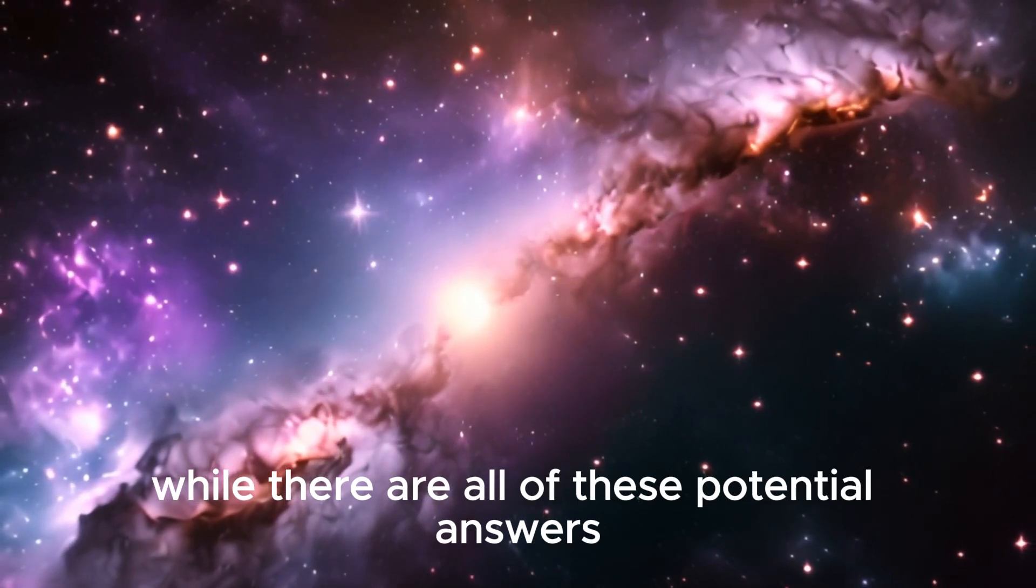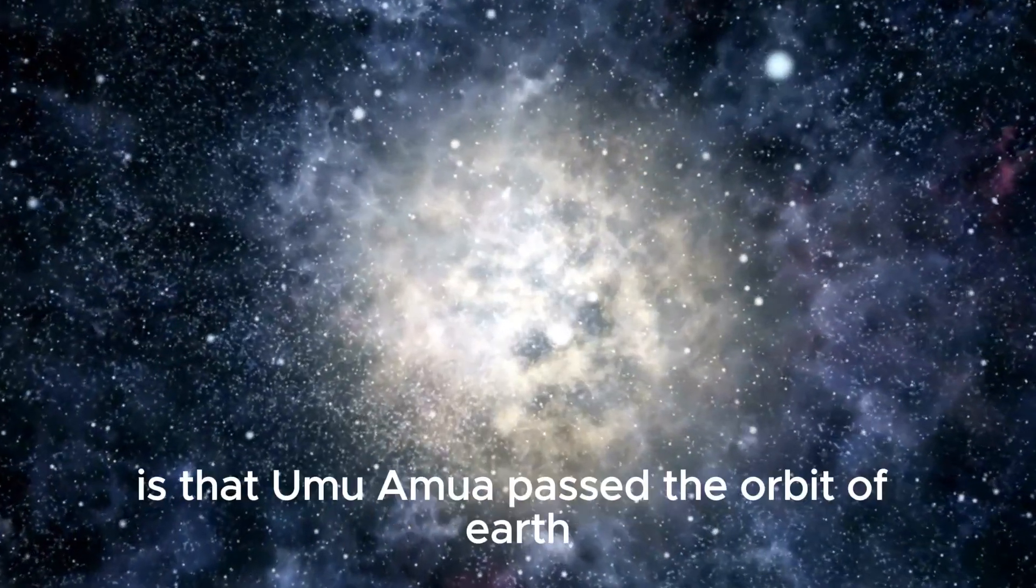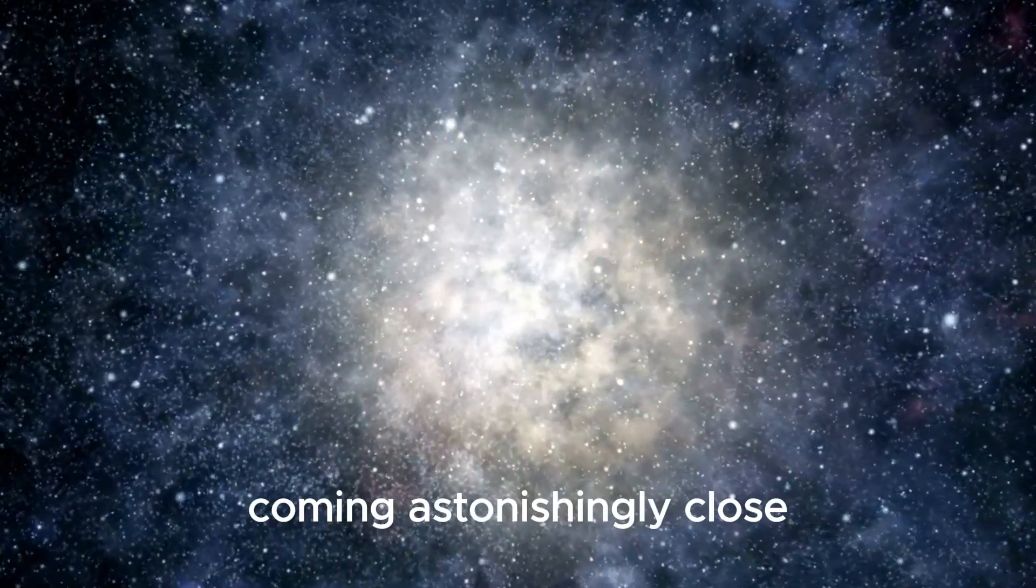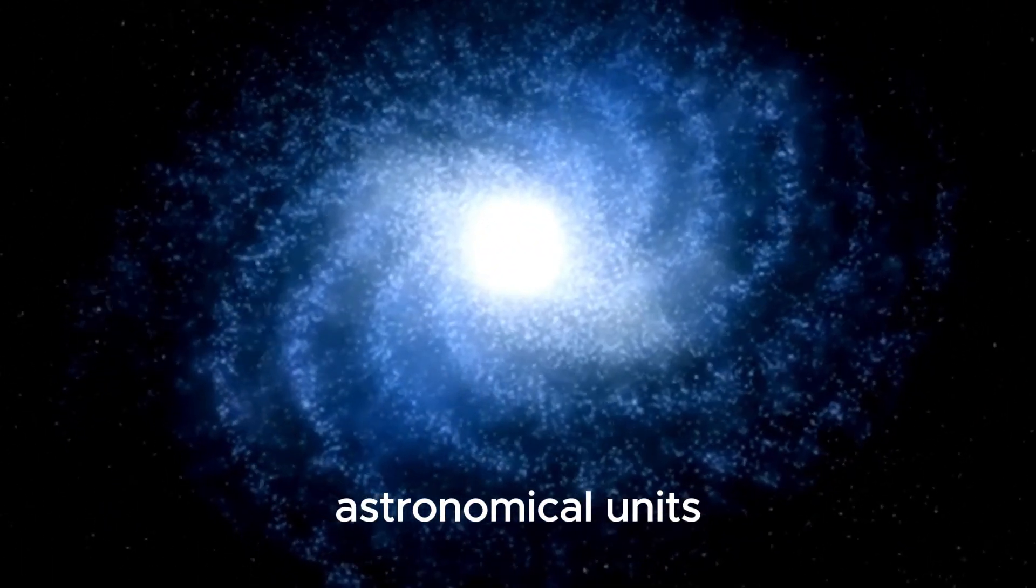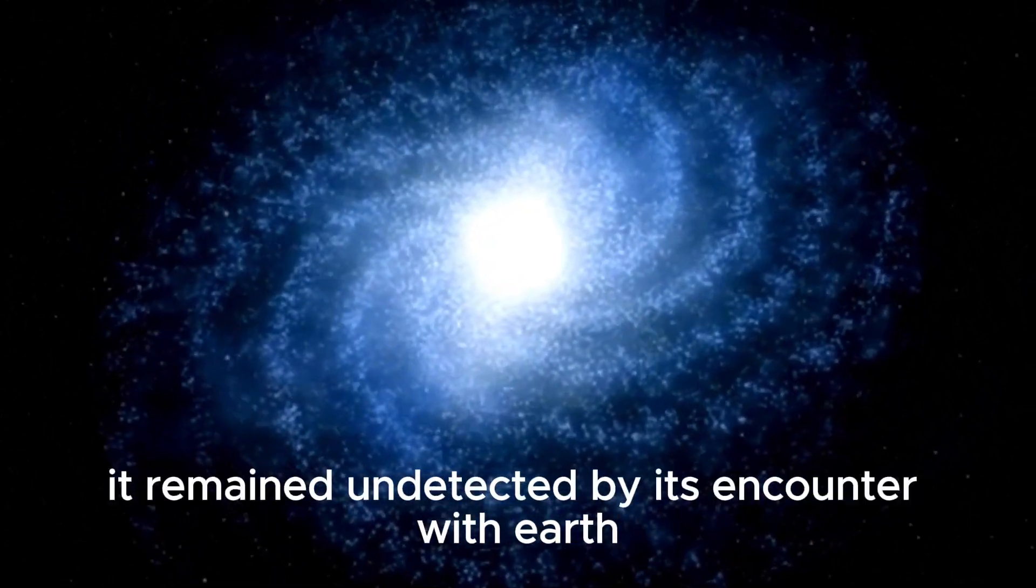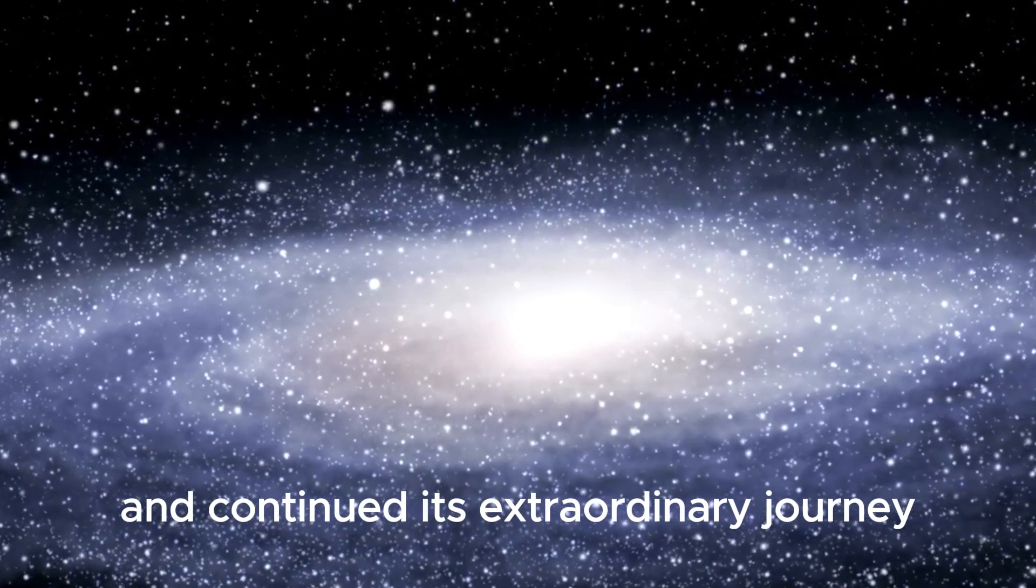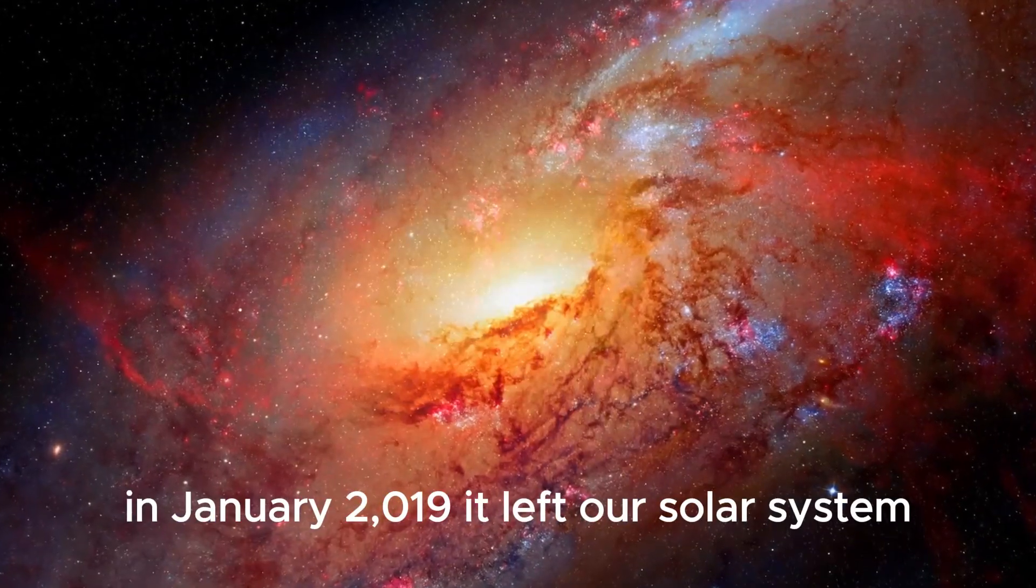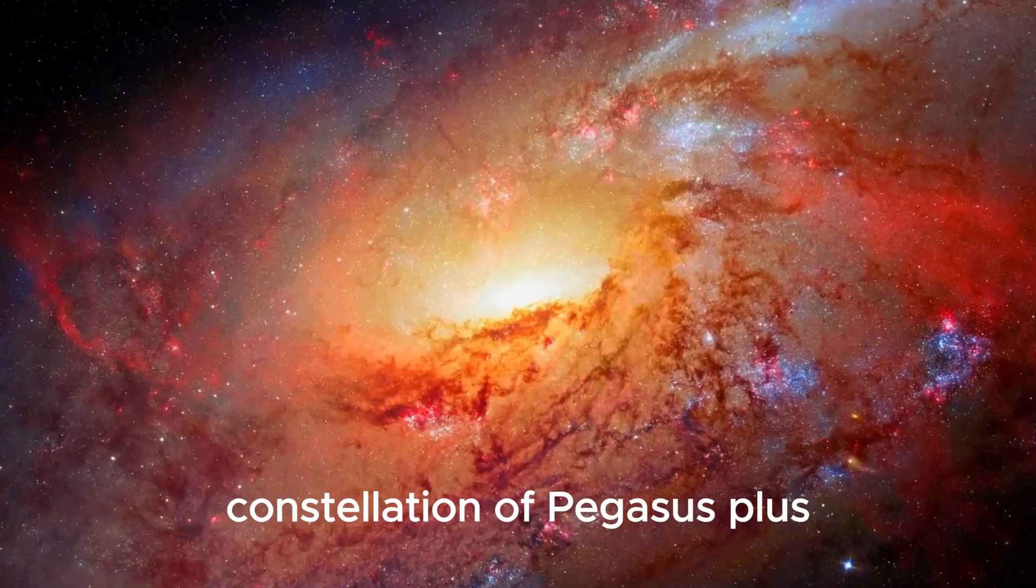While there are all of these potential answers, there aren't really any confirmations on them. What's worse is that Oumuamua passed the orbit of Earth on October 14, 2017, coming astonishingly close at a distance of approximately 0.1618 astronomical units, equivalent to approximately 24 million kilometers from our planet. Although it remained undetected by its encounter with Earth and continued its extraordinary journey venturing further into the depths of our solar system. In January 2019, it left our solar system, setting a course toward the distant constellation of Pegasus.